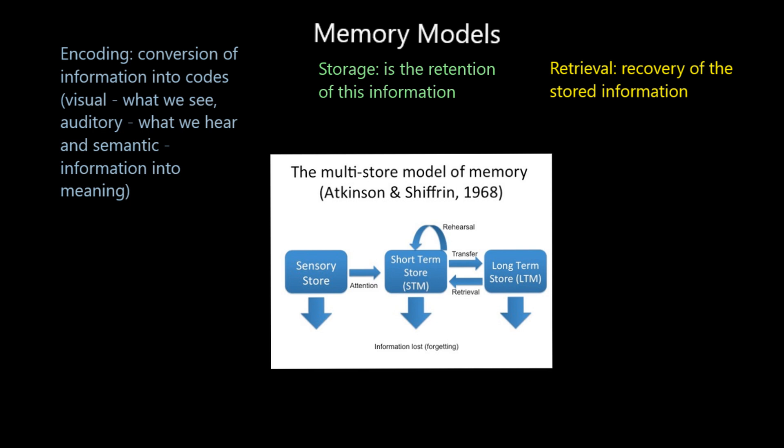We'll mainly look at visual, auditory, and semantic when we come to the Craik and Lockhart model. Storage means we've retained the information — the more common name for that is learning. Retention means to store, to keep. And retrieval is how you recover the stored information. We'll use these words when talking about the multi-store model developed by Atkinson and Shiffrin.